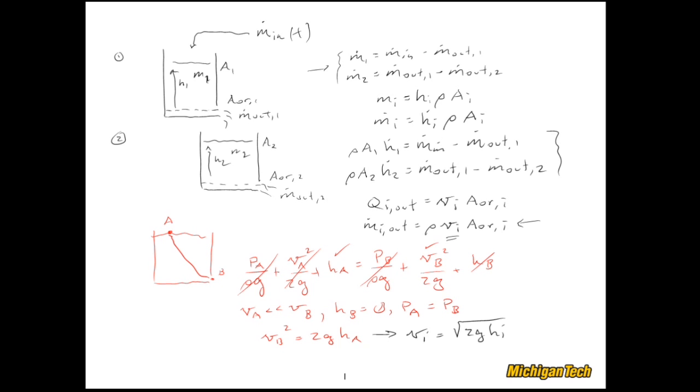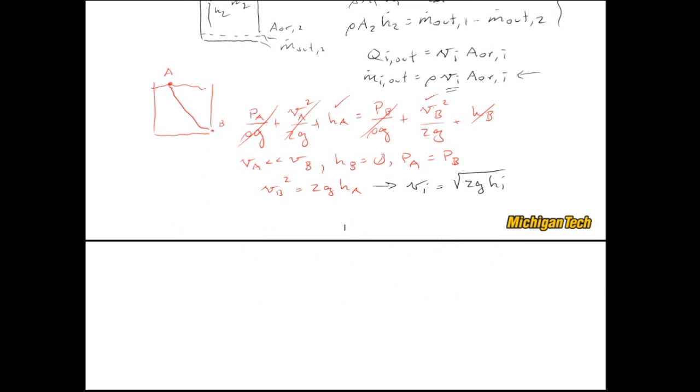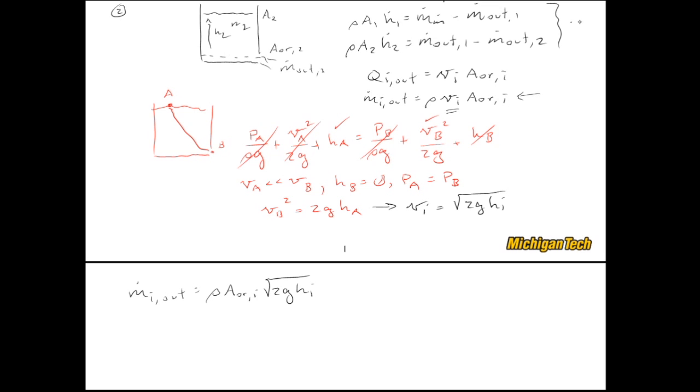I can now substitute VI into this equation, and then substitute the M dot outs into these. And I'm done. So, I'm going to shrink this down just a little bit, so I still can see a few things. And I'll just make these substitutions. So, MI out dot is equal to rho A orifice I times the square root of 2 G HI.